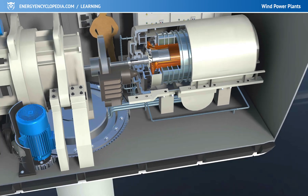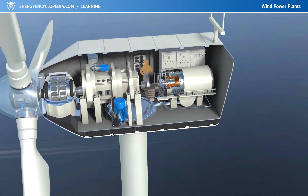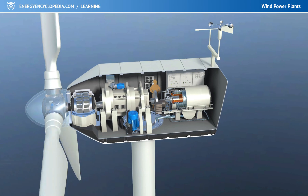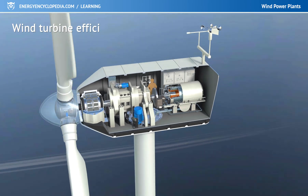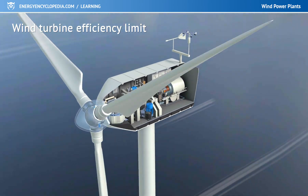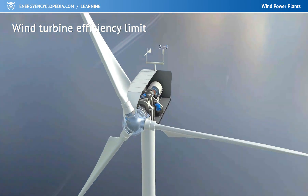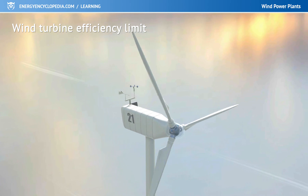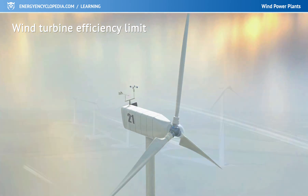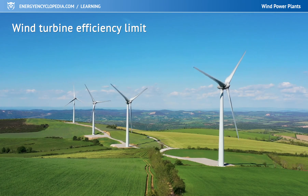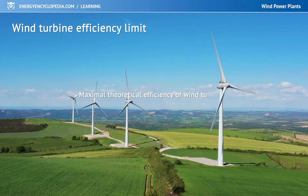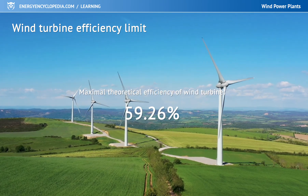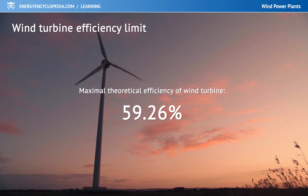But a wind turbine can never reach 100% efficiency. The wind would have to stop behind the blade, and because some air must always pass through the blades to the other side, the highest theoretical efficiency of wind turbines is 59.26%.